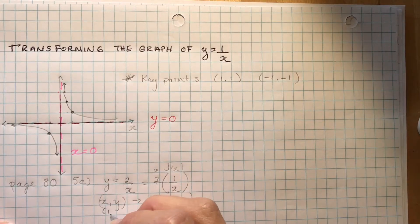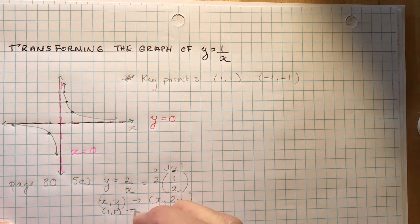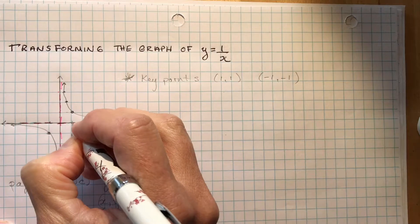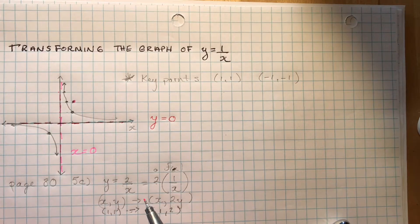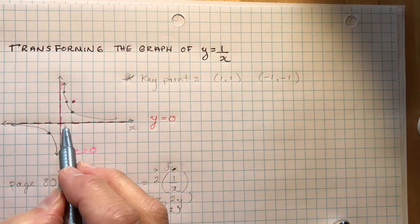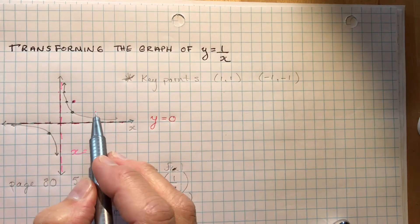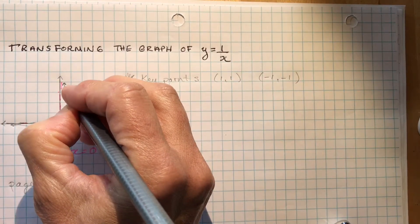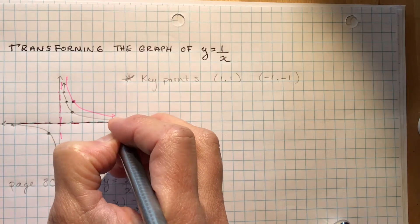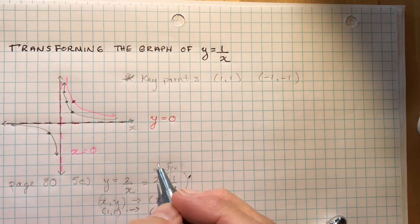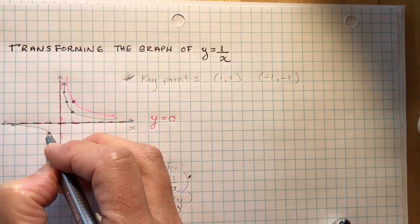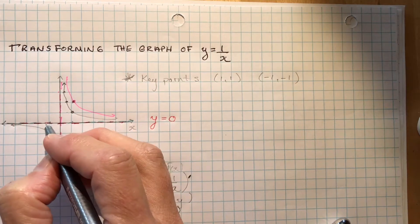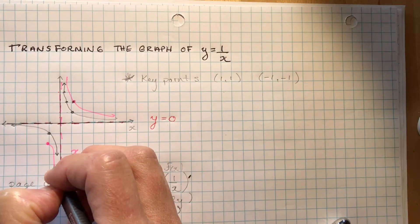So instead of the point (1, 1), I now have the point (1, 2). My function starts up higher. The asymptote doesn't move because the asymptote only moves if there's a vertical or horizontal shift — there's no shifting here, just a vertical stretch by a factor of 2. The same applies to the other point: instead of (-1, -1), it becomes (-1, -2). The asymptotes do not move.